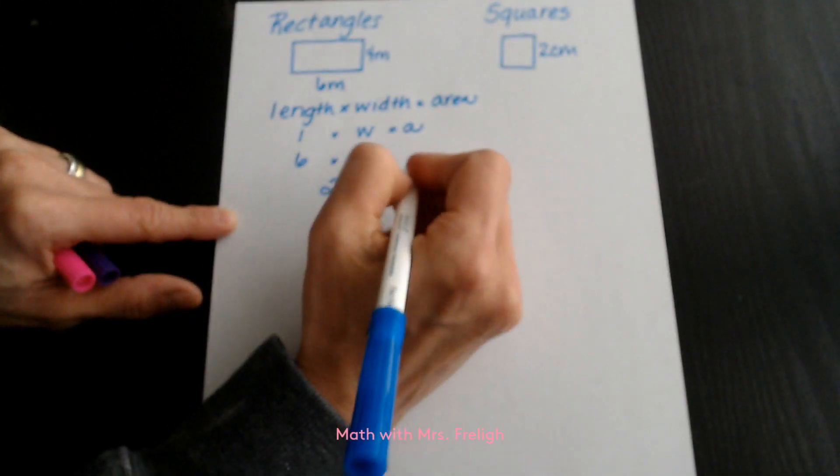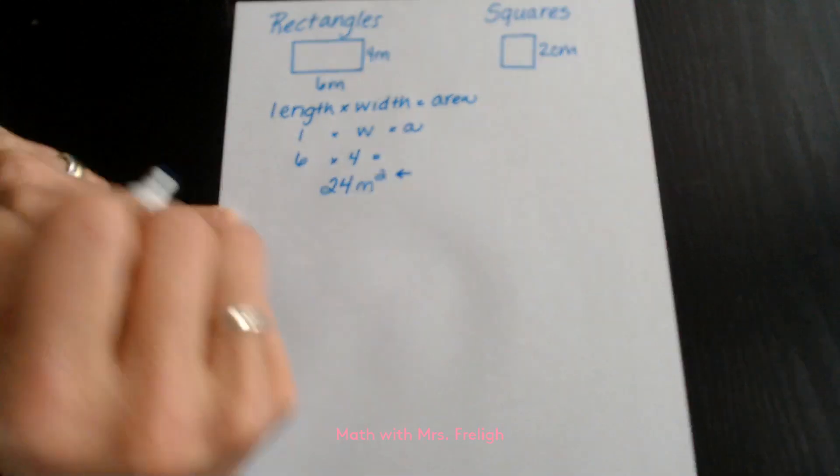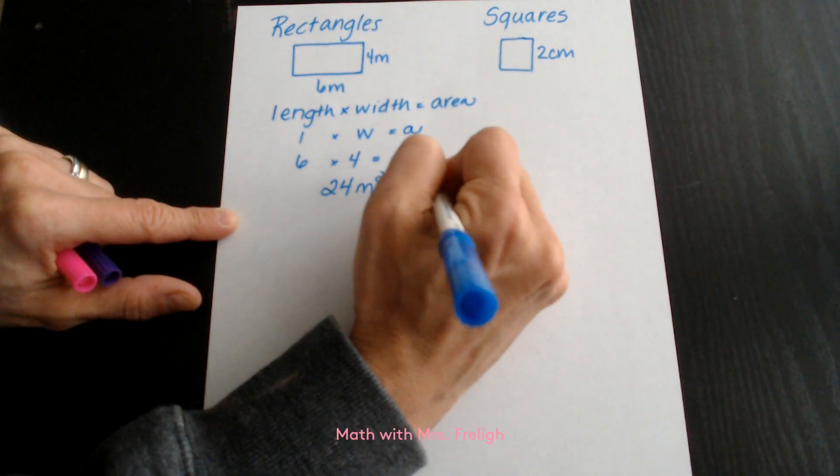When you're on the computer this week, the square will be the hardest part to put in. You can use SQ to abbreviate for squared,